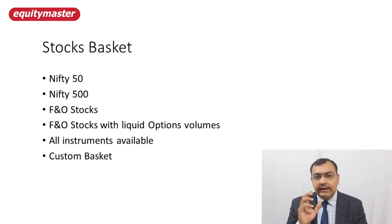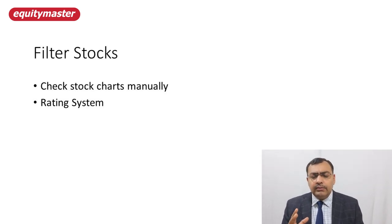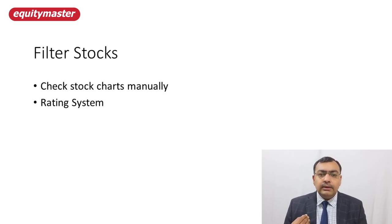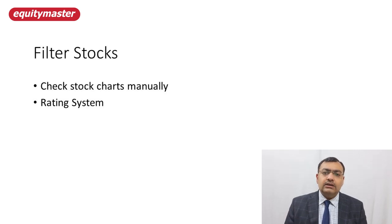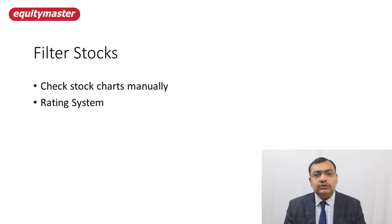Once you have defined your strategy and defined your basket of stocks, the final step is the filtration of stocks. When you scan your strategies, there may be any number of stocks from your basket, and you have to choose the best ones. You can also use a rating system: for example, if price going above the 20-day high carries 30% weight, moving average crossover carries 40%, and oscillators carry 20%, you divide the percentages and create a ranking system. This makes the filtration process much easier. That's how you do the stock selection process for swing trading.